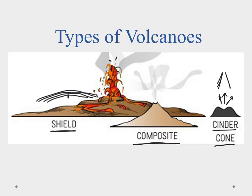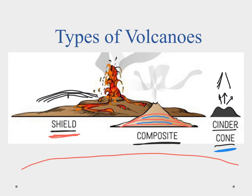The third type is the composite volcano, which combines elements of both shield and cinder cone volcanoes. It has layers of lava flows like a shield volcano, intermixed with cinder cone pileups. This alternating pattern results in the shape of a composite cone. Shield volcanoes are very long, broad, and big; composites have a mixed structure; and cinder cones are tiny and really steep.